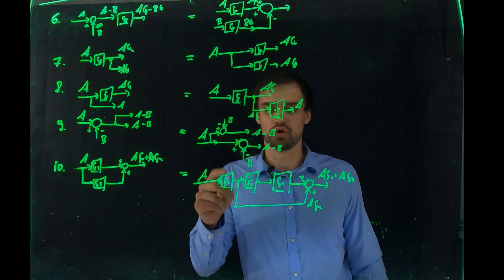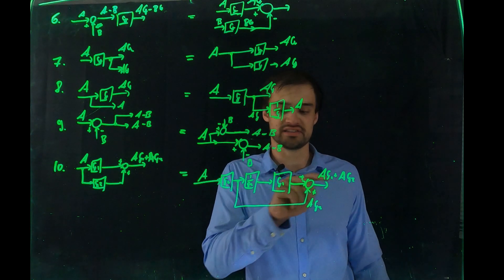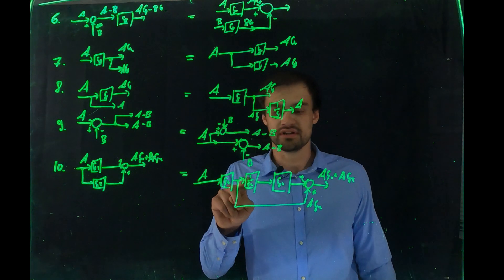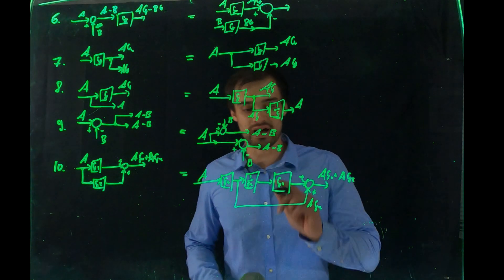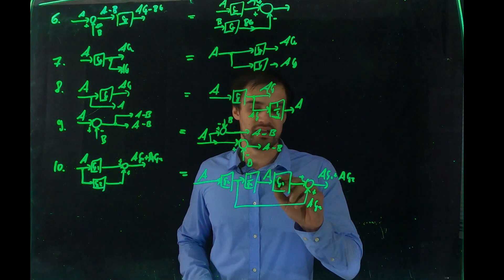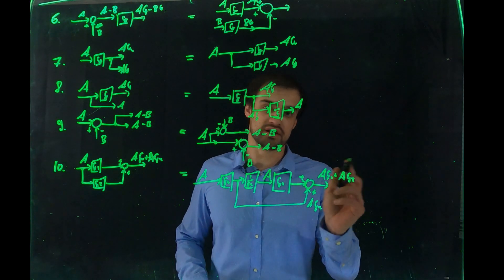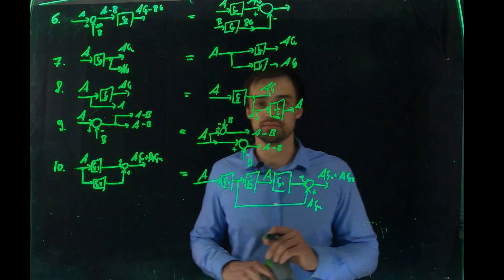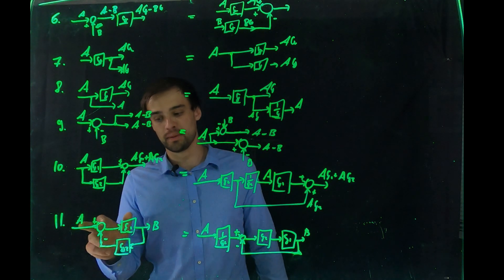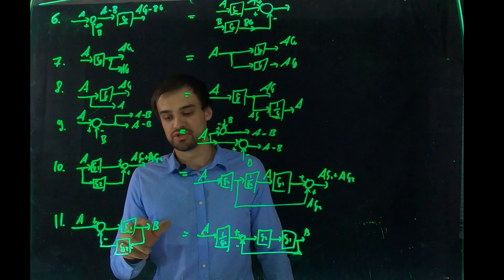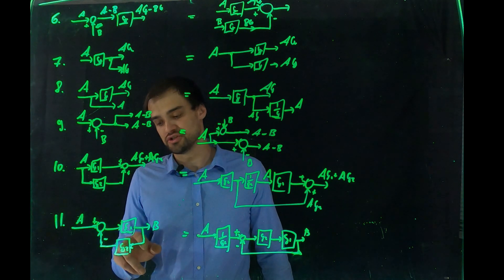Rule ten: if input A goes through G1 and G2 in parallel and their outputs are summed, you can equivalently route A through G2, take a branch through 1/G2 to recover A, multiply by G1, and add back G2's output to get A·G1 plus A·G2. Another rule: input A through G1 giving B, fed back through G2 and subtracted from A, is equivalent to A times 1/G2 minus B, all passing through G2 and G1.